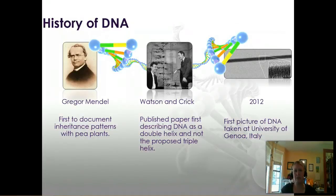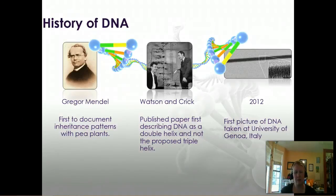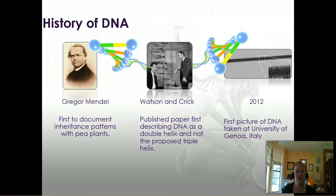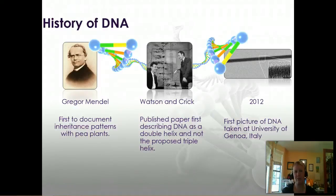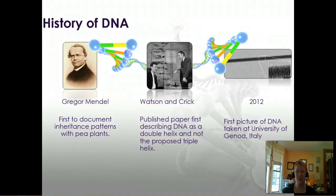It wasn't really until Watson and Crick, with Rosalind Franklin's help, elucidated the structure of DNA as the double helix that we started driving forward the processes of replication, transcription, and translation. By understanding those methods, we were finally able to understand that it is DNA that is the inheritance molecule and not protein. For a long time people thought it was proteins because there are 20 amino acids — 20 building blocks — so it seemed easier for proteins to encode all those different sequences rather than just four nucleotides. But once we had the structure, we really understood that DNA is what passes that on.